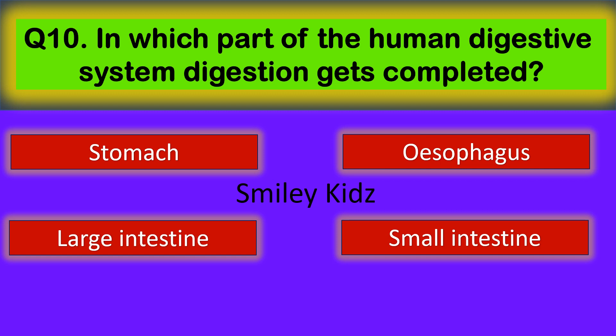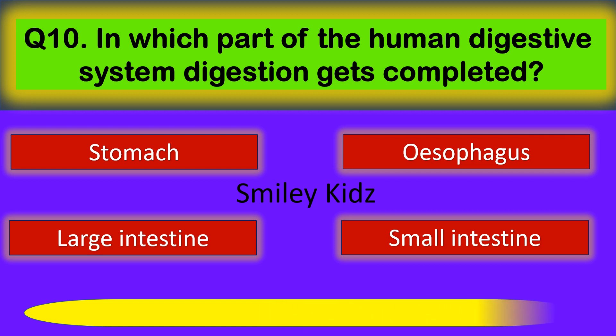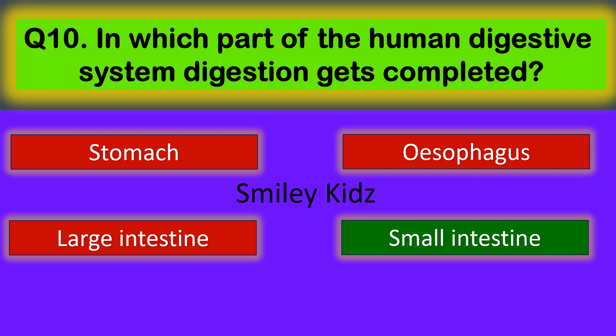Question number 10. In which part of the human digestive system does digestion get completed? Your options are Stomach, Esophagus, Large Intestine, and Small Intestine. The correct answer is Small Intestine. Digestion gets completed in the Small Intestine.